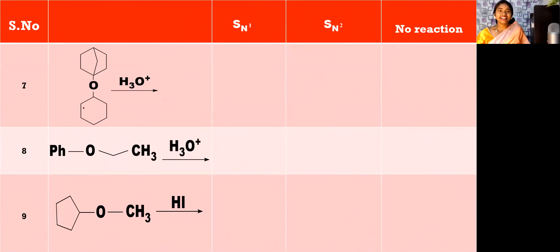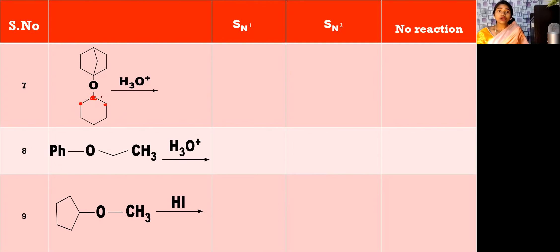Let's see the next question. One side, you have an aryl bridged halogen present, and another side you have a cyclohexane ring. This carbon is surrounded by two other carbons, so it is a secondary. And water is a weak nucleophile. Whenever a weak nucleophile is present and it is a secondary, it involves SN1 reaction.